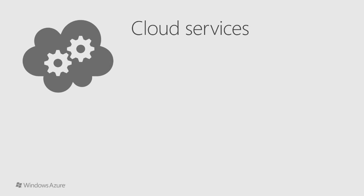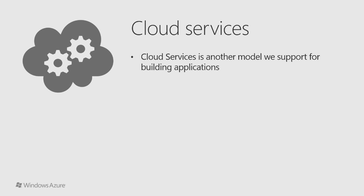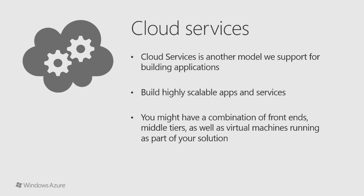Now let's look at Cloud Services. Cloud Services is another model we support for building scalable applications. It enables a broader set of workloads than Azure websites while providing more automated management than Azure virtual machines. These applications are extremely scalable automatically by the nature of how you build them with Cloud Services — they can support one to hundreds or even thousands of cores. They support not only web-based deployments, but also multi-tier architectures with a combination of front ends, middle tiers, and virtual machines. Azure Cloud Services also supports automated application management, making it easy to deploy, scale out, isolate, and recover from any hardware failure. There is also support for automatic updates of the operating system.